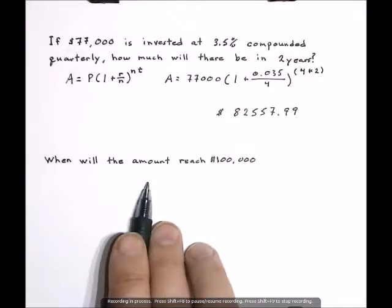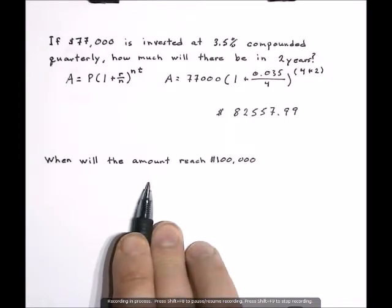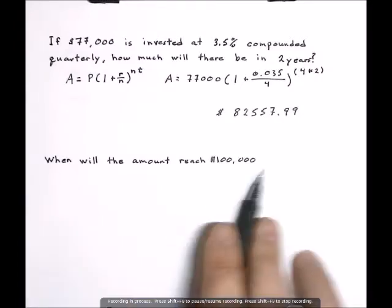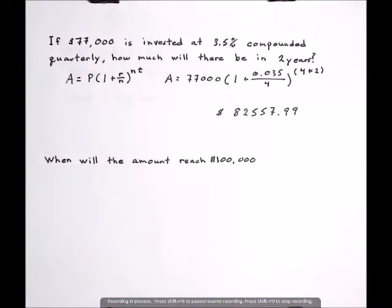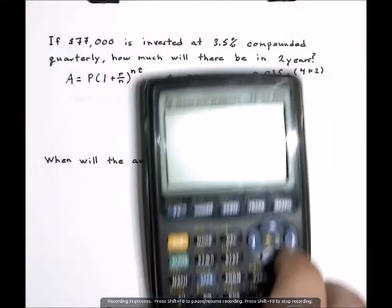The next type of problem you're going to have is, when will the amount reach a certain amount? And this is a graphing calculator type problem. It's basically there because MyLabs Plus likes graphing calculators, and they always attach this type of problem to this type of problem. Later on, you'll learn how to handle this algebraically. But for right now, what you are going to do when you get a problem like that is take out your calculator.